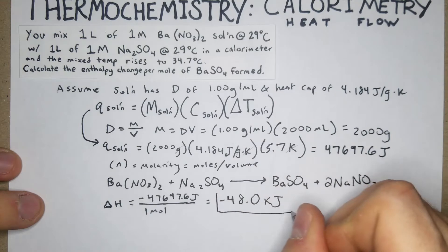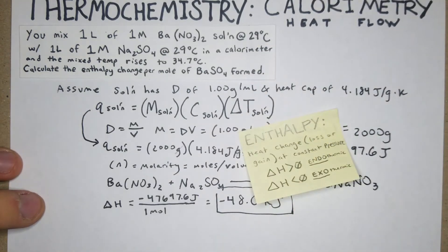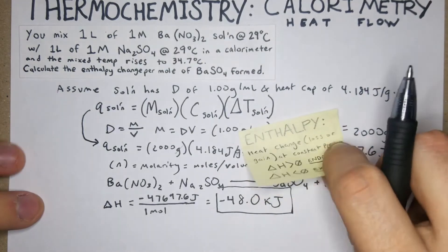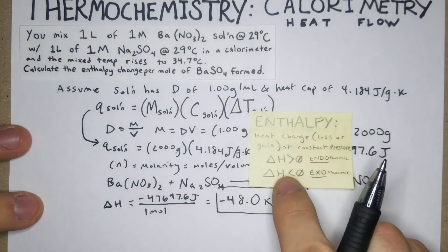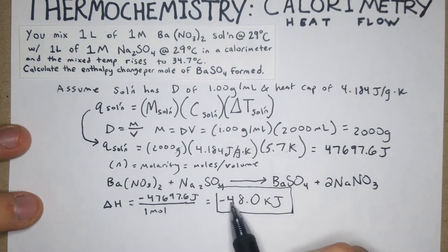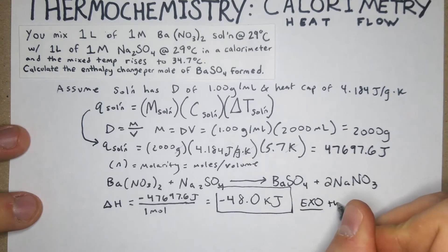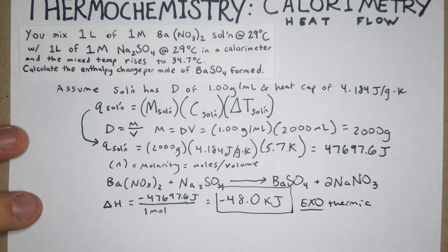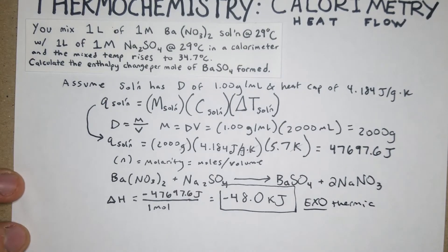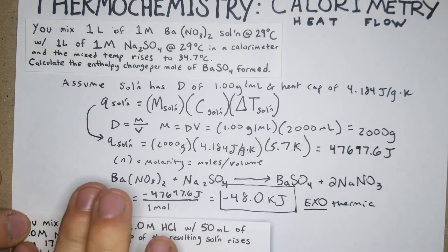A common follow-up question is whether the reaction is exothermic or endothermic. If ΔH > 0, it's endothermic; if ΔH < 0, it's exothermic. Since we got a negative number, this is an exothermic process. That's pretty straightforward — we'll move on to problem two.